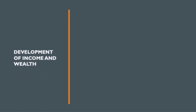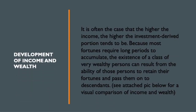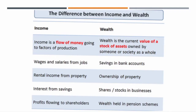Last is the development of income and wealth. It is often the case that the higher the income, the higher the investment-derived portion tends to be, because most fortunes require long periods to accumulate. The existence of a class of very wealthy persons can result from the ability of those persons to retain their fortunes and pass them on to their descendants. The difference between income and wealth: income is the flow of money going to factors of production, while wealth is the current value of a stock of assets owned by someone or society as a whole.